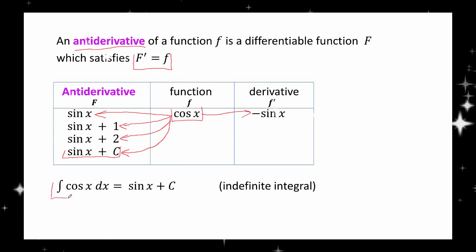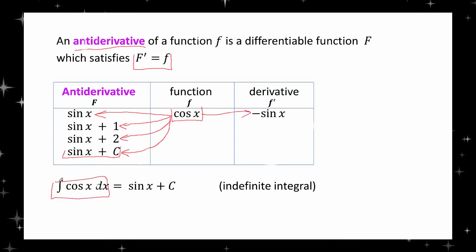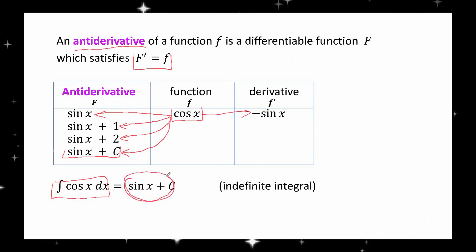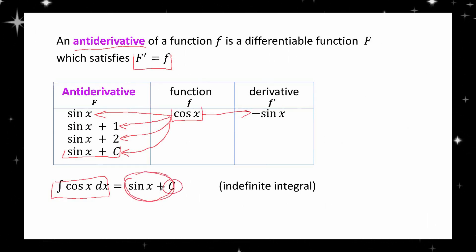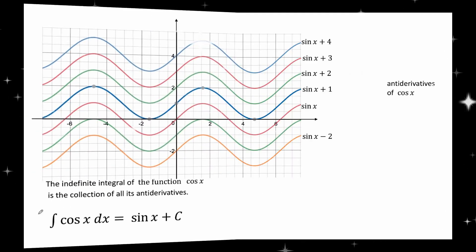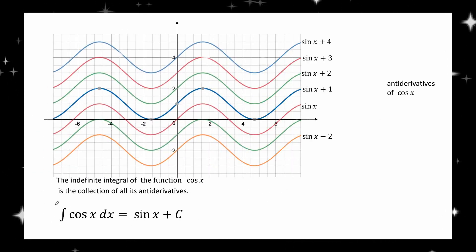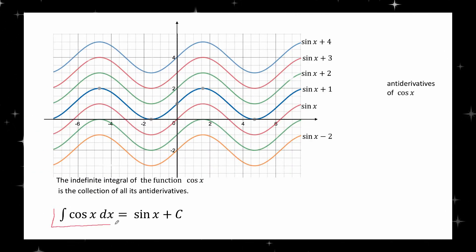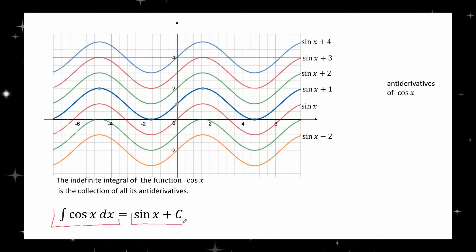By the indefinite integral of cosine we mean the collection of all its antiderivatives — that is, the collection of all functions of the form sine x plus c where c is a constant. The indefinite integral of cosine is the set of all functions of the form sine x plus c, where c is any constant.